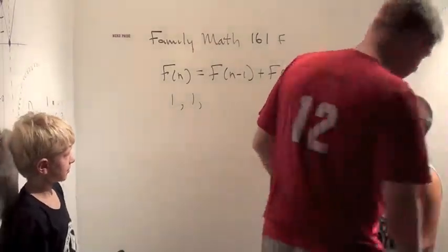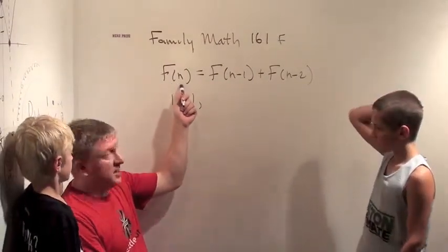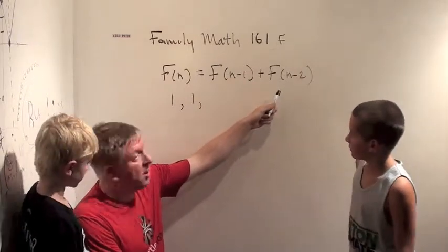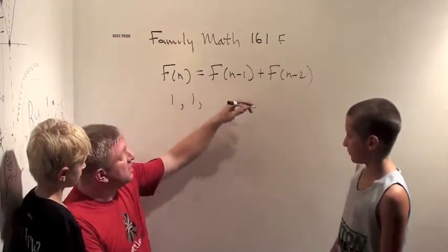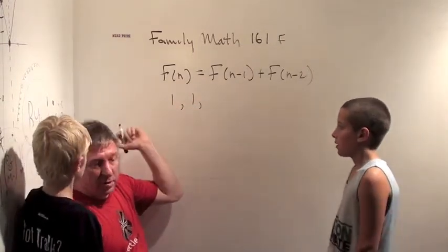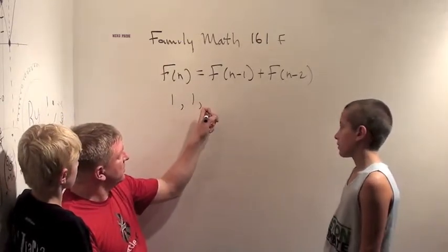So our Fibonacci numbers start with this formula. The nth Fibonacci number is the one behind it plus the one two behind it. So our formula was twice the one behind it plus the one two behind it. So the Fibonacci formula is similar and I start with one one. In our prior one we started with two two. We start with one one and then what's the next number?